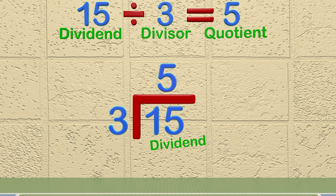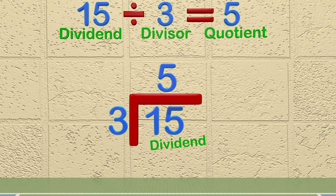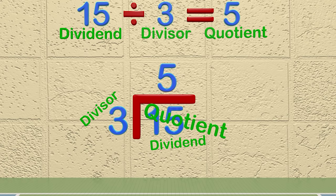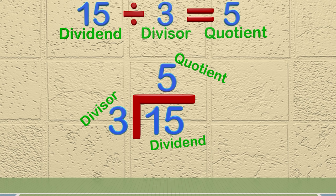The 15 is the dividend and is on top of a division bar. The 3 is the divisor and the number 5 is the quotient. Let's look at one last way to show a division problem.